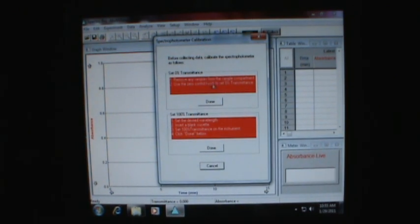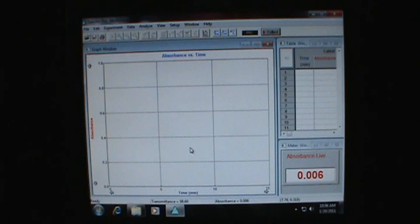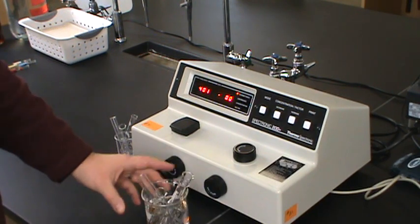Now we're into calibration. We already did the zero percent, so we'll do done on that. Wavelength is set. Let's grab a blank cuvette, get some water in it, into the instrument. Now I can adjust my hundred percent. That's done. So we can click done. Now we're ready to go. The computer's all set up.